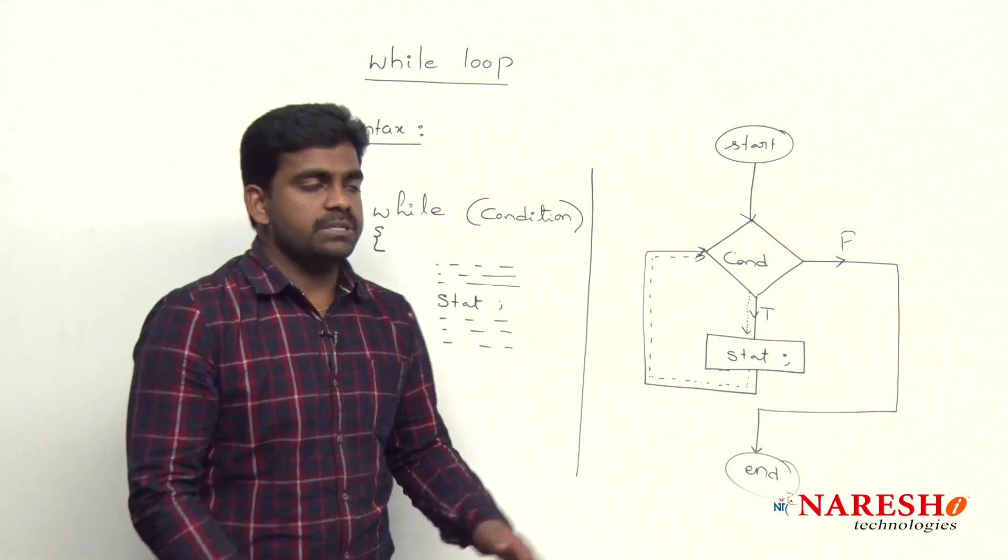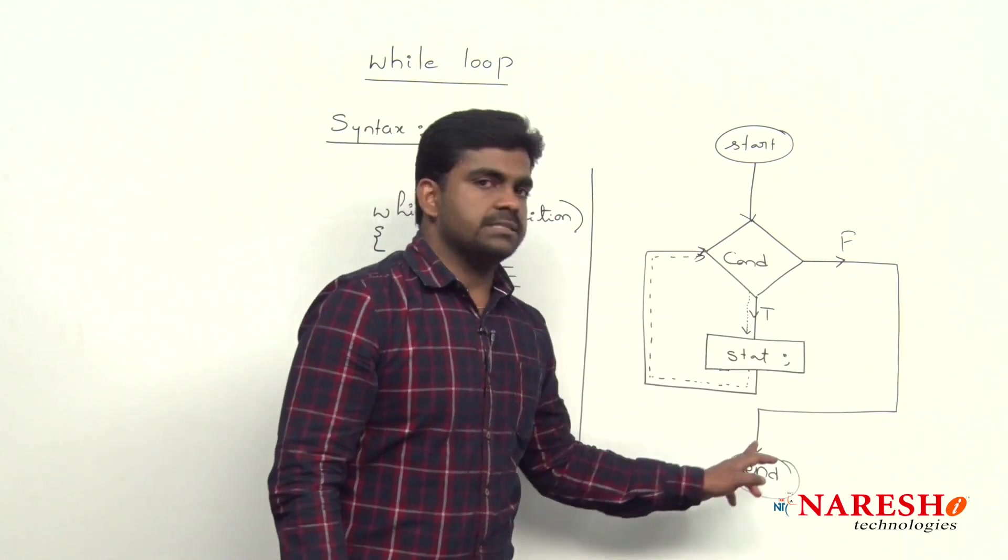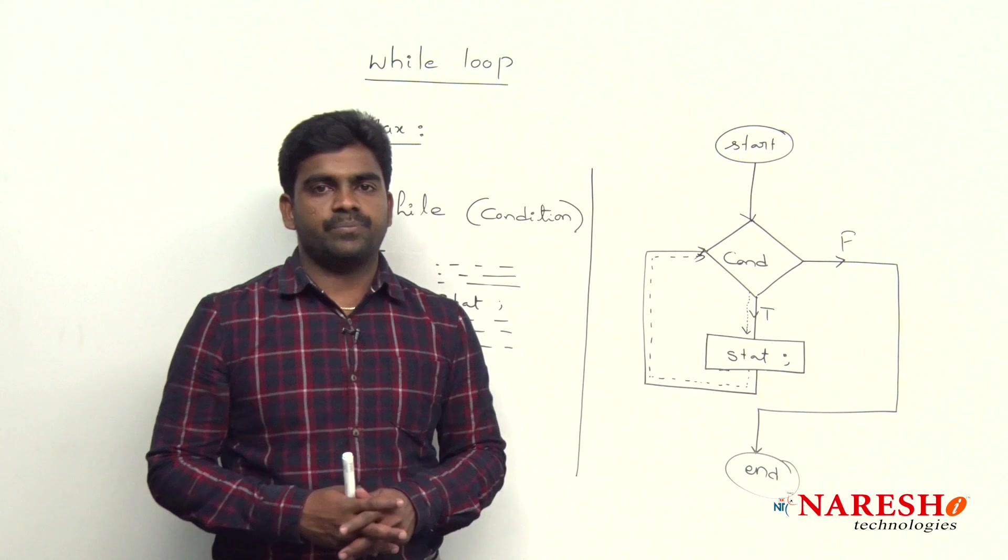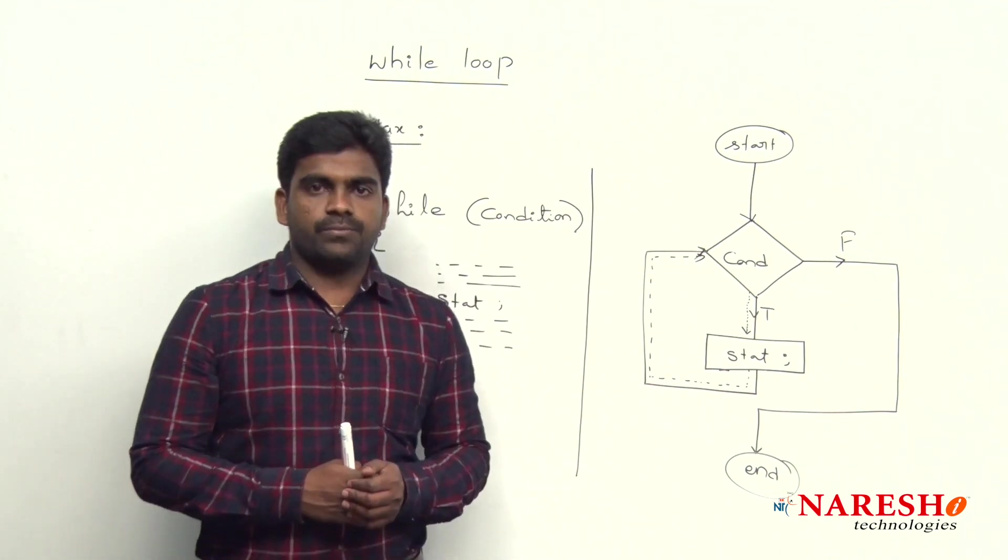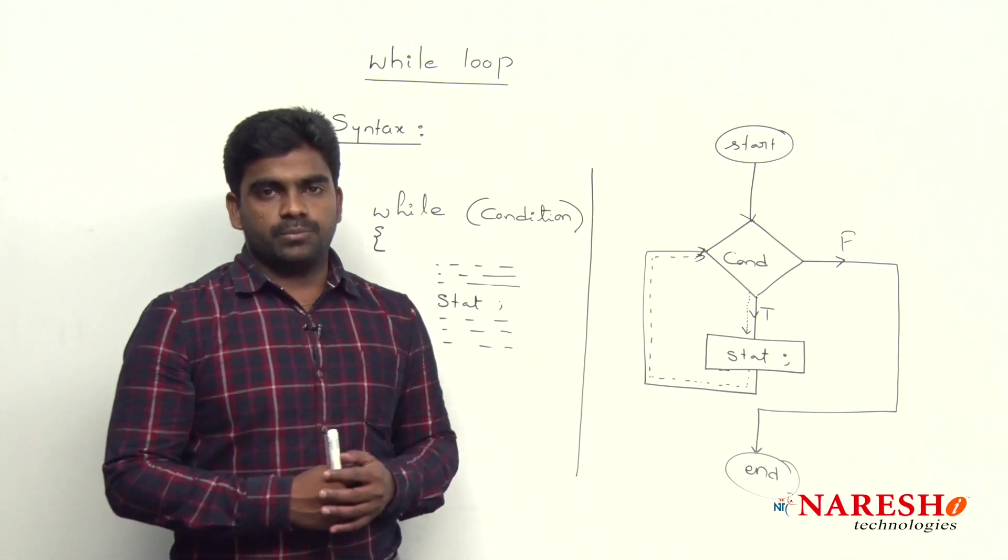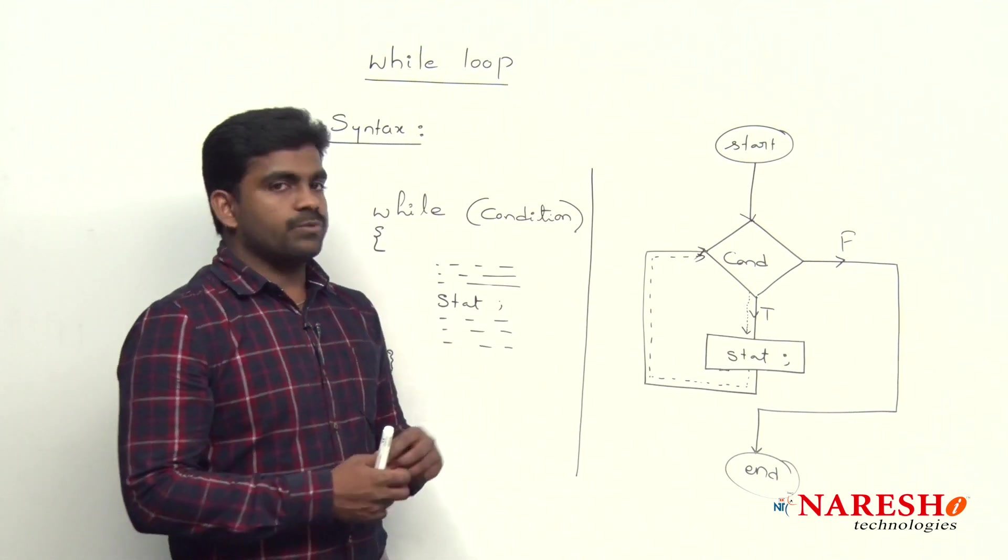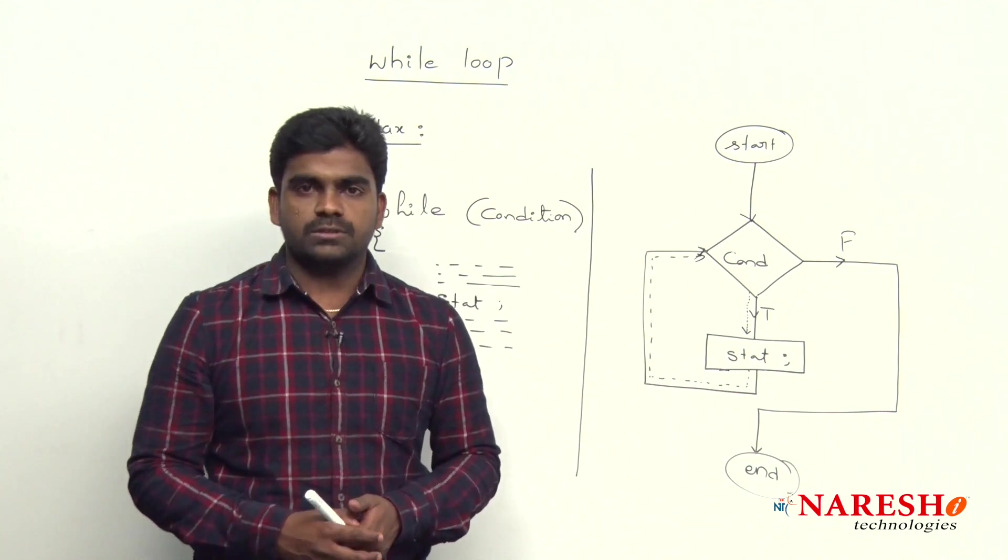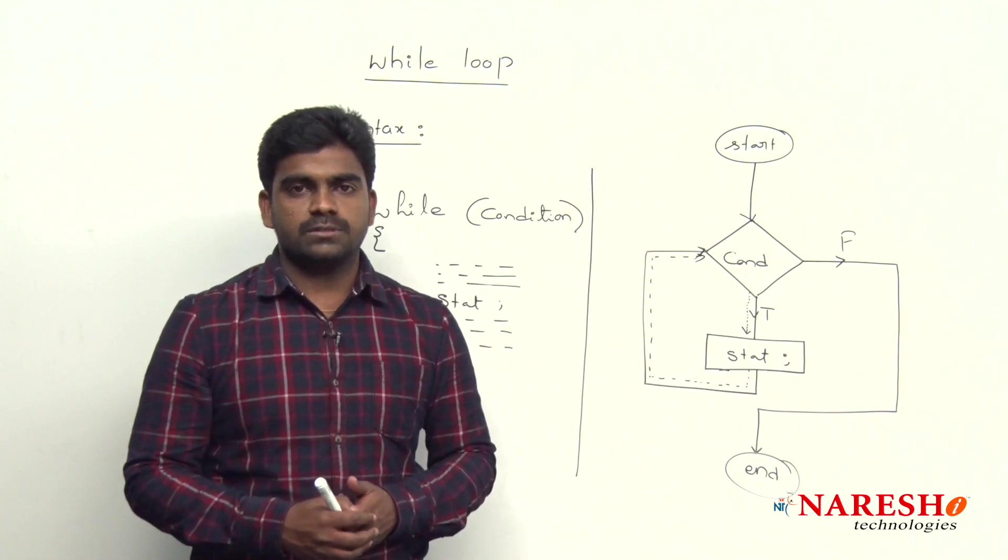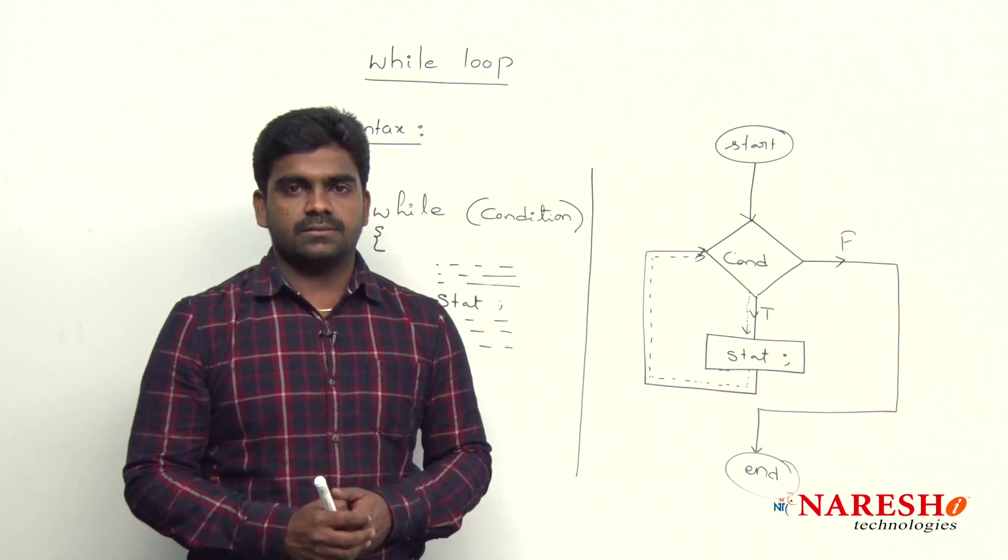When will it terminate? Whenever the specified condition has failed, then it will terminate automatically. This is the syntax and workflow, the flowchart of while loop. Based on this while loop, the logical programming I am going to explain in the coming videos. Please keep watching all the videos and improve your logical skills. Thank you all.